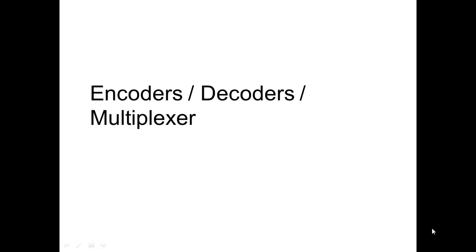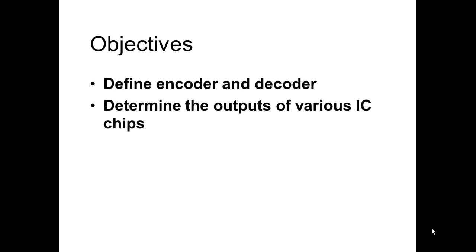In this lesson, we're going to discuss encoders, decoders, multiplexers, and comparators. First, we're going to define what an encoder and a decoder is, determine different outputs of various ICs, and look at gray code and what gray code involves.